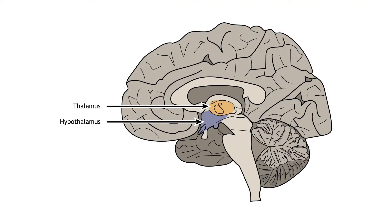When presented with a stressor, our brain activates the hypothalamic-pituitary-adrenal, or HPA, axis, which initiates a hormonal response. The hypothalamus, which sits below the thalamus, integrates information from many regions of the central nervous system and plays a critical role in maintaining homeostasis in the body.